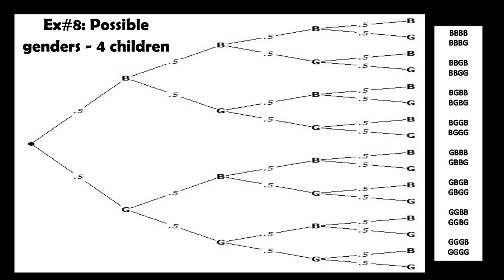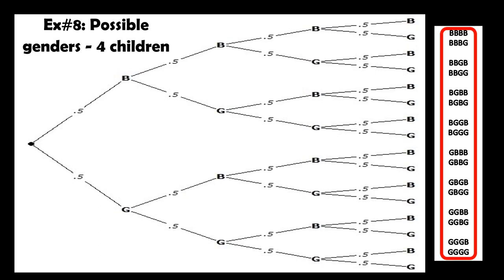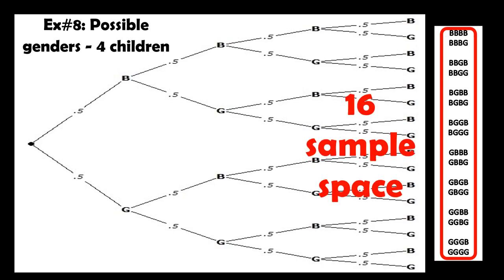This tree diagram shows the possible genders for four children. At each birth it's either a boy or a girl, and at the fourth birth again either boy or girl can come out. All the possible gender combinations are listed in the corner — it can be all boys, three boys and one girl, three girls and one boy, or all girls. The sample space is 16.